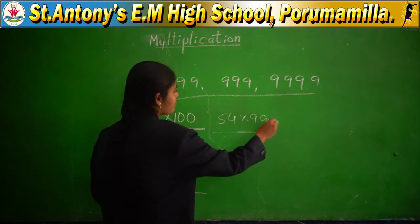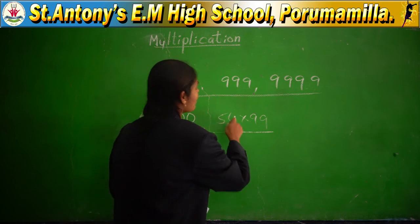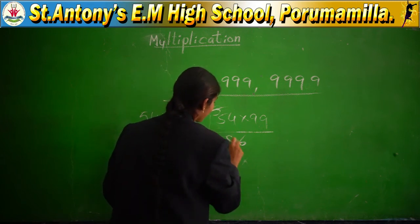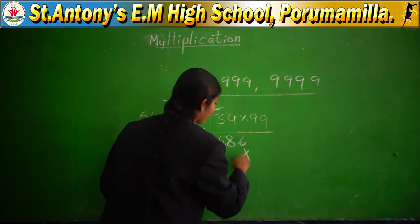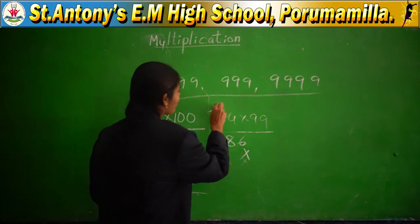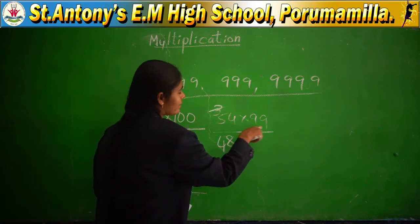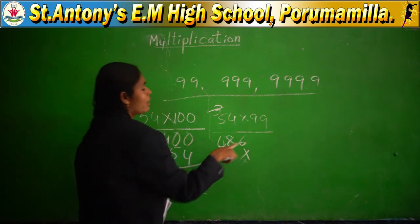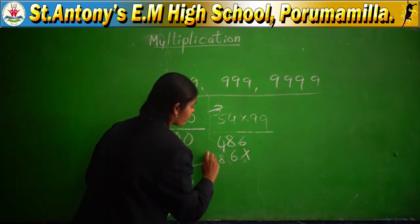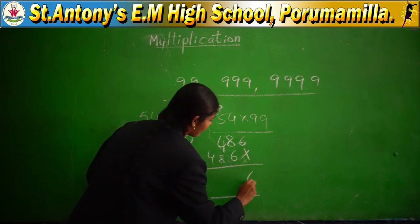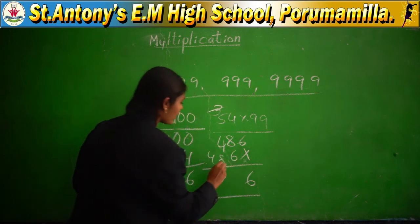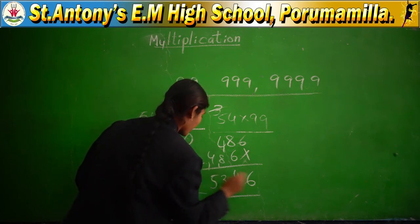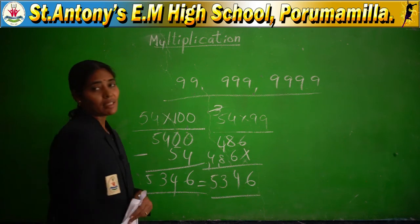To verify: 9 fours are 36, 9 fives are 45 plus 3 is 48 — write 6 and carry 4. Since both multiplier digits are 9, repeat the same step with the second 9. Arrange and add: 6, 8 plus 6 is 14, 8 is 9, 13 plus carry gives the same answer 5,346. Both answers match — confirmed.